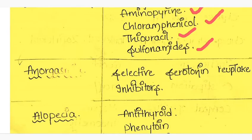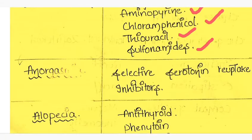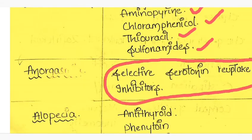Anorgasmia is the major side effect for the selective serotonin reuptake inhibitors. This is the specific side effect for this class of drugs, that's why this is very very important.